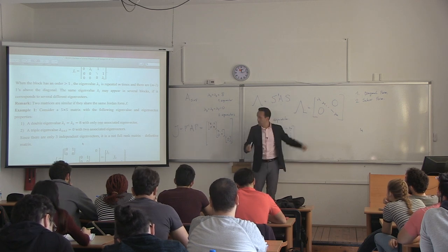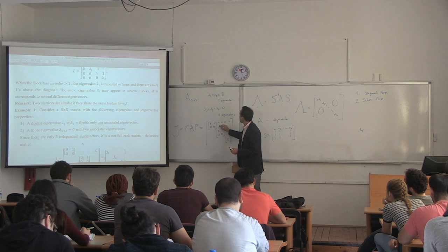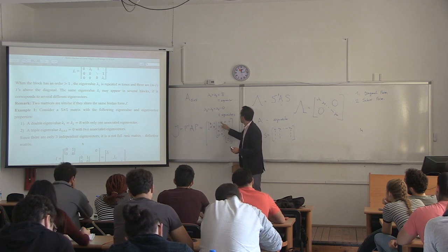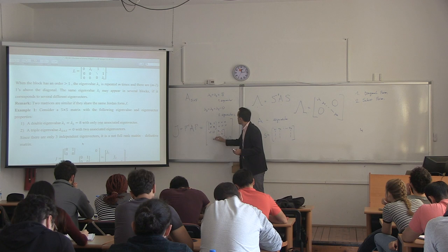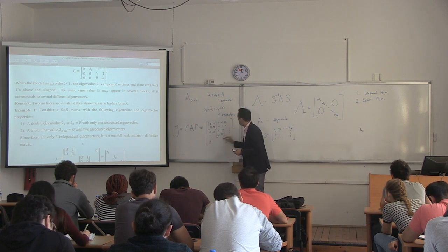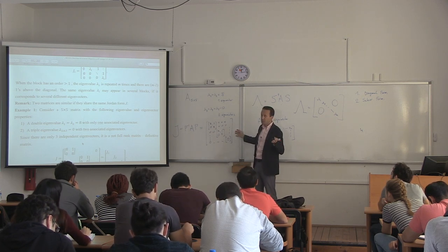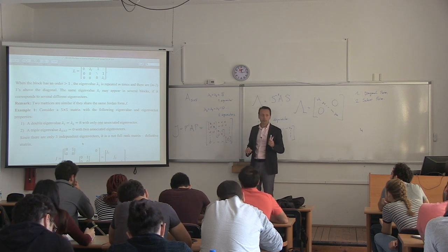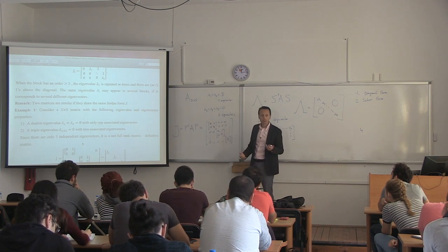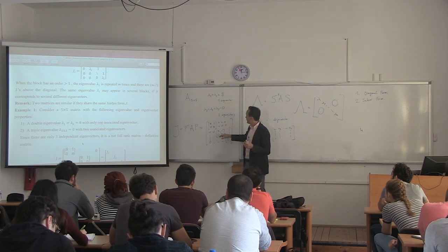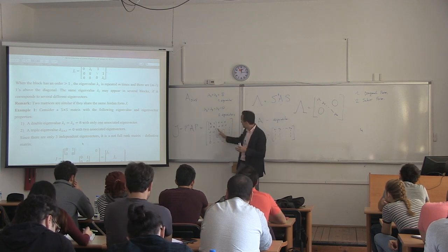The diagonal of this matrix has all the eigenvalues: eight, eight, zero, zero, zero — quite similar to the full diagonal form, except you have two ones above the diagonal. Everything else is zeros. This is true for a matrix that doesn't have enough independent eigenvectors. If we had five independent eigenvectors, we would not have these ones, and we'd have five independent Jordan blocks all aligned on the diagonal.